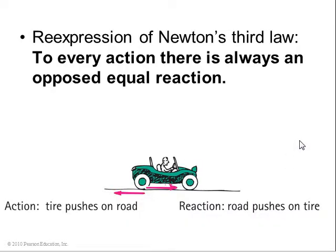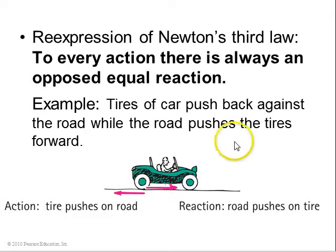So another way to express Newton's third law is, to every action, there's always an opposed equal reaction. Example: the tires of this car push backwards against the road. So that's your action force. The reaction is that the road pushes forwards on the car. And this is actually how your car goes when you step on the gas.